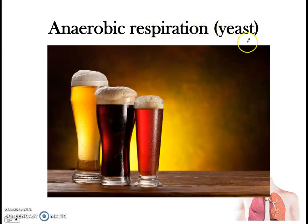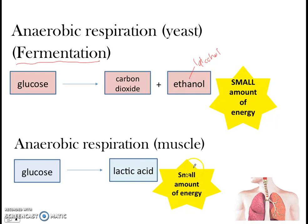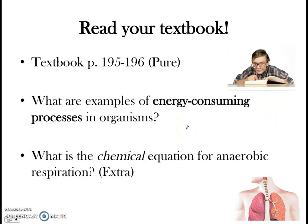There's also another form of anaerobic respiration which occurs in yeast, important for making drinks like beer. In yeast, anaerobic respiration is also called fermentation — glucose is broken down to carbon dioxide and ethanol, the alcohol component of beer. This is different from anaerobic respiration in muscles, where glucose is broken down to lactic acid and a small amount of energy. Just be aware there are two types of anaerobic respiration, but focus on the human one in muscle cells. Read your textbook pages and name some examples of energy-consuming processes in organisms, and take a look at the chemical equation for anaerobic respiration.